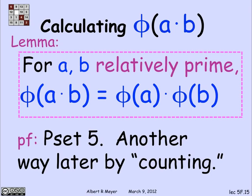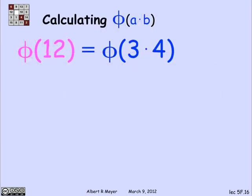Let's just use this fact about phi, the multiplicativity of phi, to see how it lets us calculate phi of an arbitrary number. So in particular, phi of 12, which looked complicated earlier, well, 12 is 3 times 4.